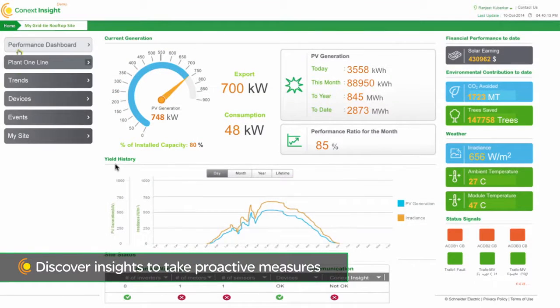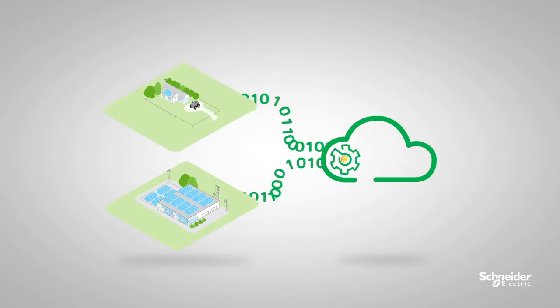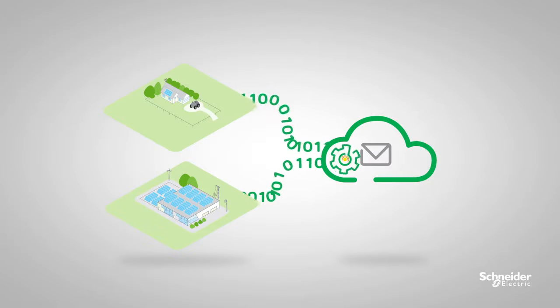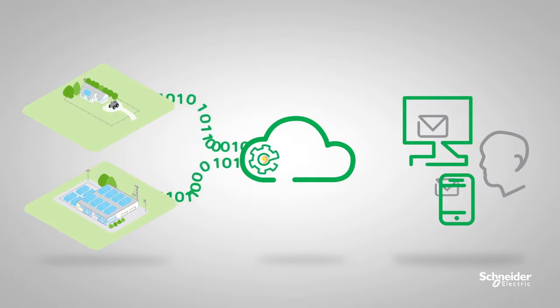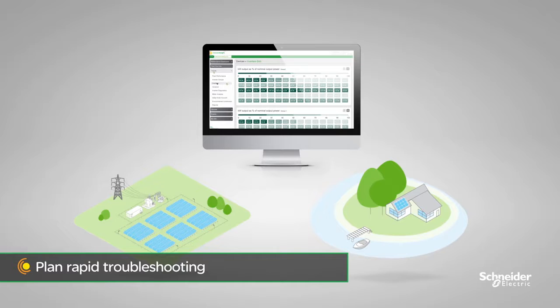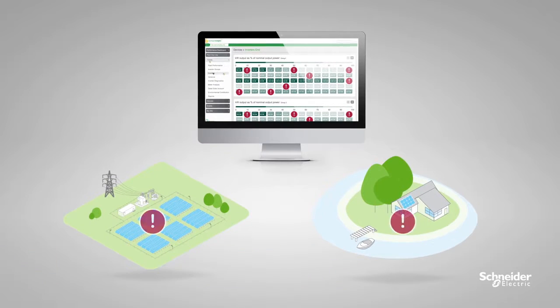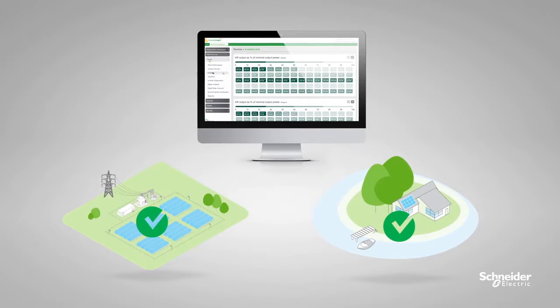Connext Insight provides analytics, reporting, and performance alerts to help you make sense of vast amounts of data and take proactive measures to avoid significant yield loss. When issues arise, near real-time alarms will allow you to plan rapid troubleshooting actions and quickly minimize yield losses.